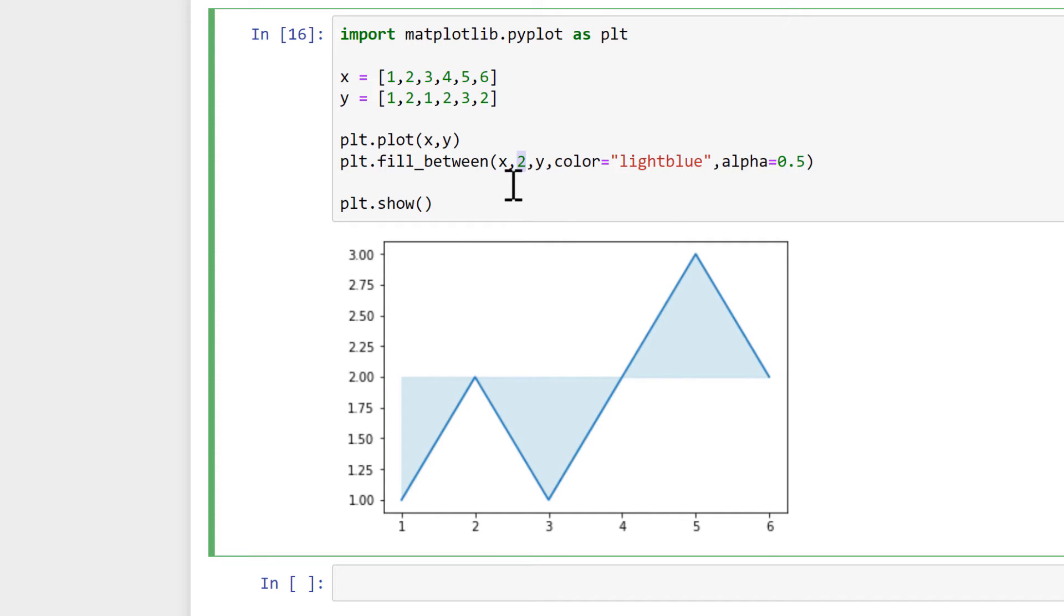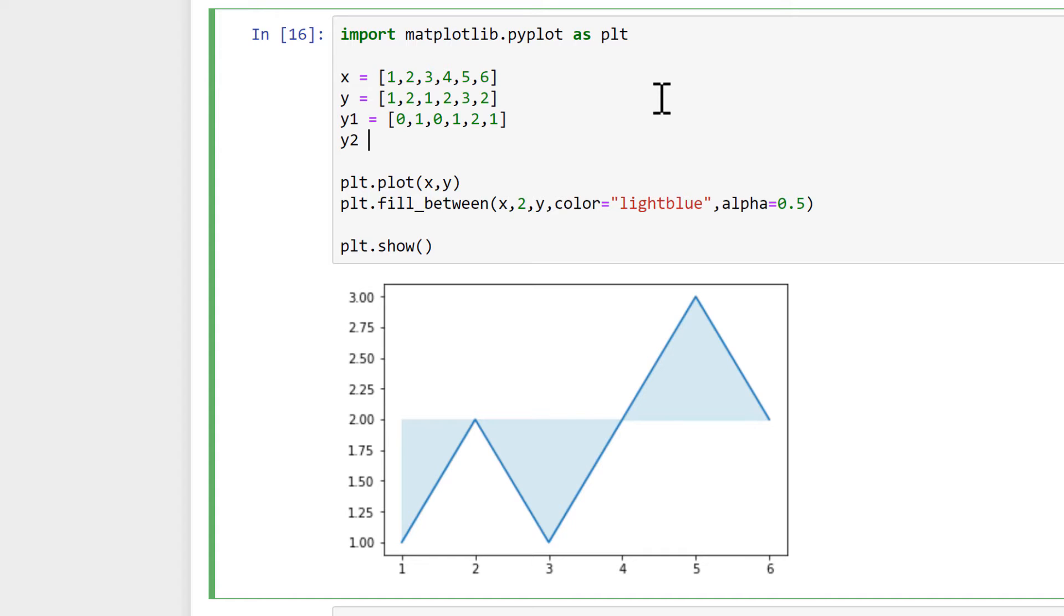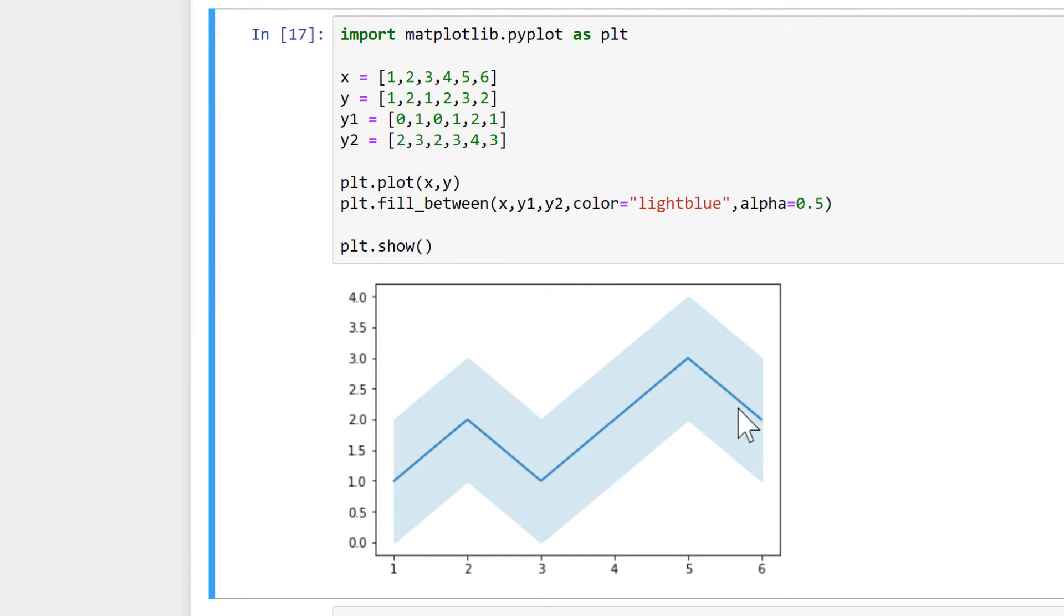And in addition to having a fixed value, we can also put in our own values. So I'll do Y1 here and then make all of these values a little bit smaller than the Y values. Then I'll do Y2 and make all of these values a little bit bigger than the Y values. Then we'll change this here to Y1 and this to Y2 and run this. And now we get a filled area going from the Y1 values to the Y2 values. So we get something that looks more like an uncertainty range.